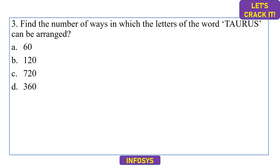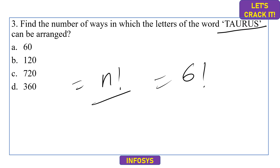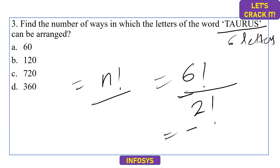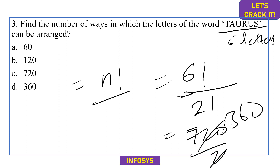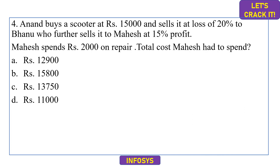The third question is permutation and combination: find the number of ways the letters of the word TAARAS can be arranged. The formula is n! divided by the factorial of repeated letters. There are 6 letters total, and A is repeated twice, so the answer is 6! ÷ 2! = 720 ÷ 2 = 360. Option D is correct.